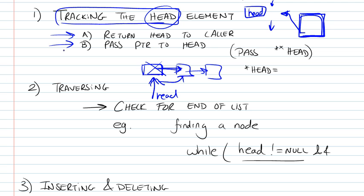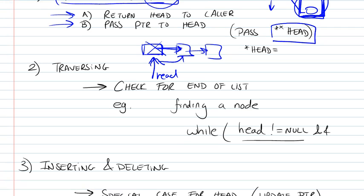The other way is to actually pass the functions, the modifying functions, a pointer to your head. So remember that head itself is a pointer and you're passing a pointer to head, so it's a pointer of a pointer. Your function is going to do the modification that it has to do and it's going to update your head and return from there. So you're relying on your function to update your head. You choose whichever way you want.